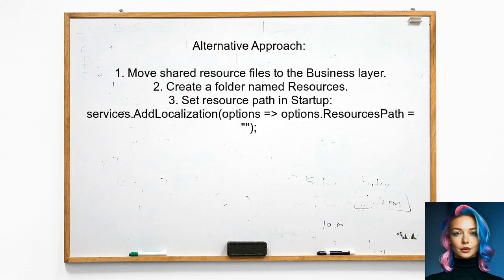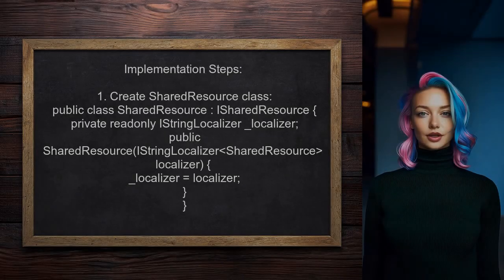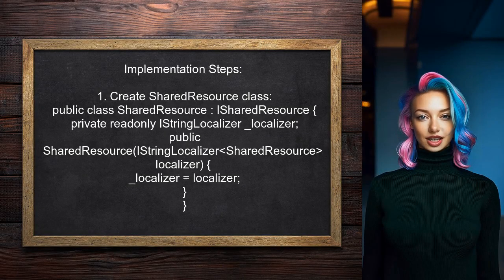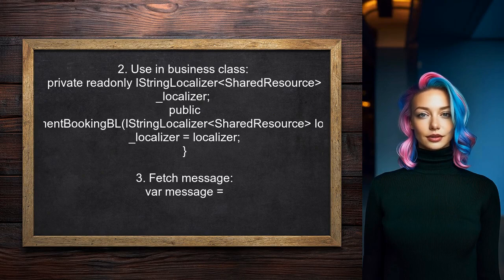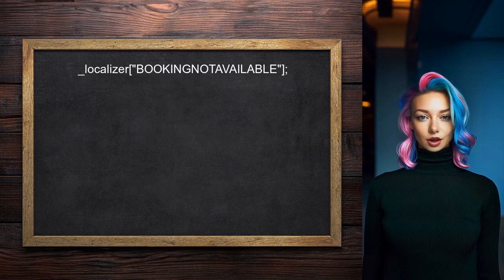One alternative approach is to move your shared resource files to the Business Layer library. Create a folder named Resources and ensure the resource path in Startup is set to empty. This allows you to use IStringLocalizer in classes outside of controllers. In your shared resource class, implement IStringLocalizer, then inject IStringLocalizer into your business class constructor to access localized strings. For example, you can fetch a message using the localizer in your methods.